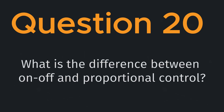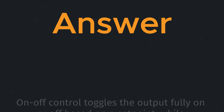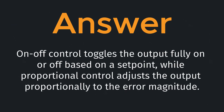Question twenty: what is the difference between on-off and proportional control? On-off control toggles the output fully on or off based on a set point, while proportional control adjusts the output proportionally to the error magnitude.